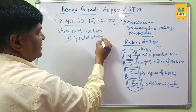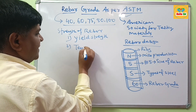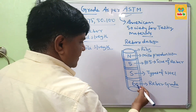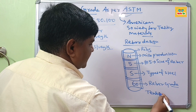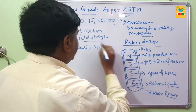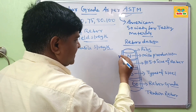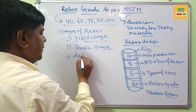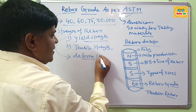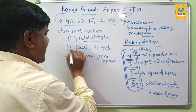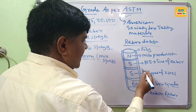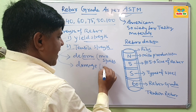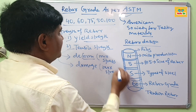The first unit is yield strength and the second is tensile strength. Yield strength is the minimum amount of stress that a material can hold before it begins to permanently deform. Tensile strength is the amount of stress that rebar can hold before it is permanently damaged — it is the maximum amount of stress.